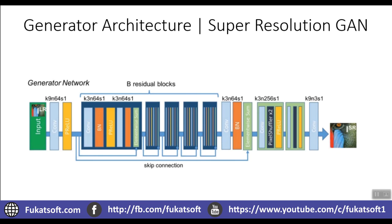Inside the residual blocks, we have a convolutional layer followed by batch normalization and a Parametric ReLU layer, and then we do the element-wise sum. We have these residual blocks inside the generator architecture of Super Resolution GAN. After those residual blocks, we pass through one more convolutional layer with 64 channels and stride equal to 1, then batch normalization, then element-wise sum. The output is then passed to the sub-pixel convolutional layer, which upscales and increases the input image size.